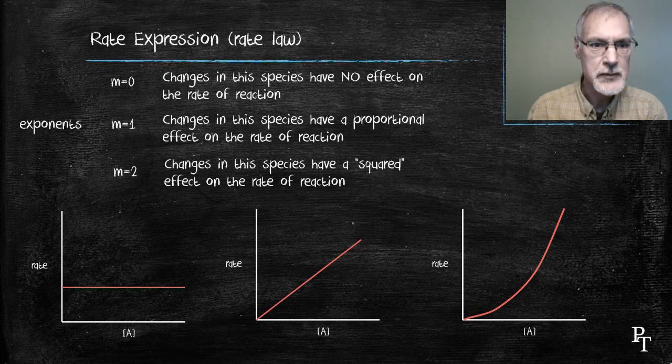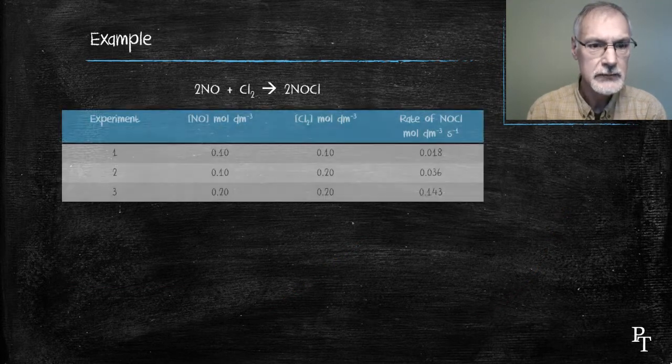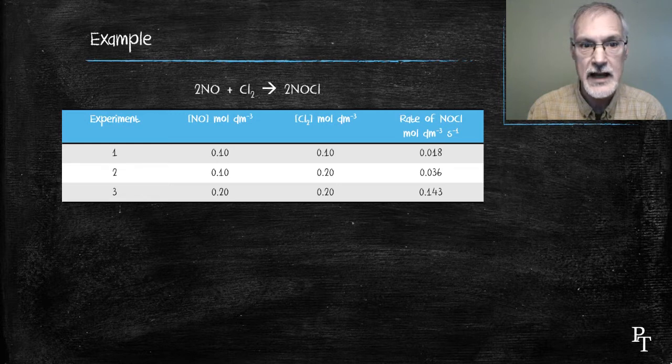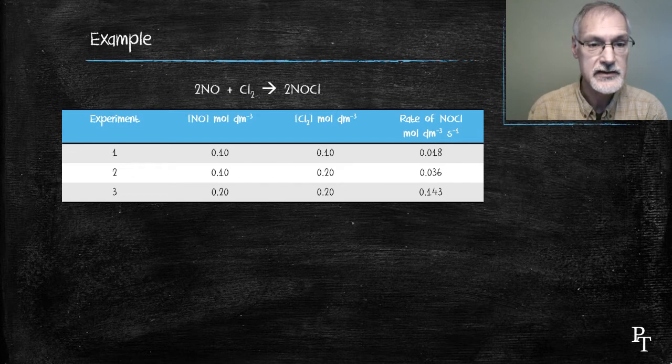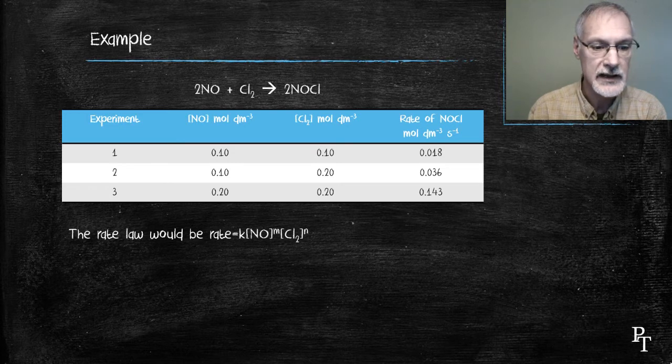To determine these exponents, let's look at some experimental data for this reaction. Here we've conducted three experiments, varying the concentrations of our two reactants, and studied the rate of the reaction over in the far right column. The general rate expression for this reaction is given as follows, where I replace A and B with my two species, nitrogen oxide and chlorine gas.